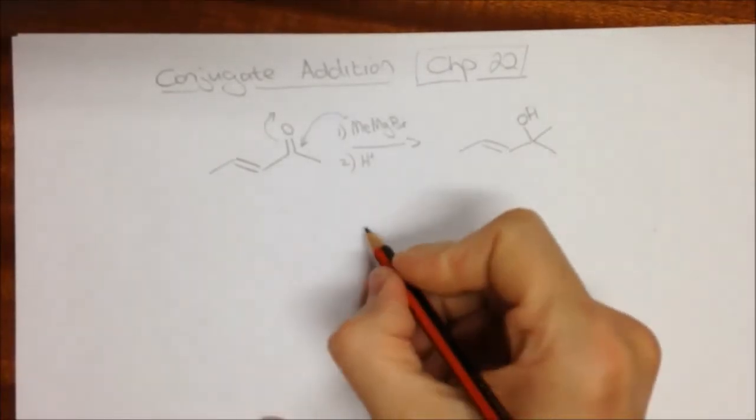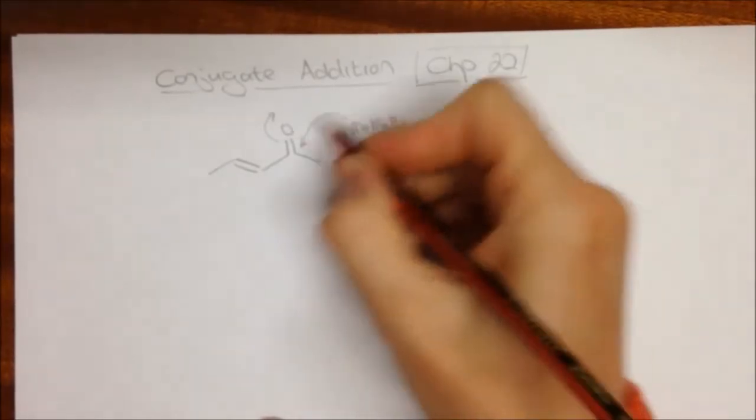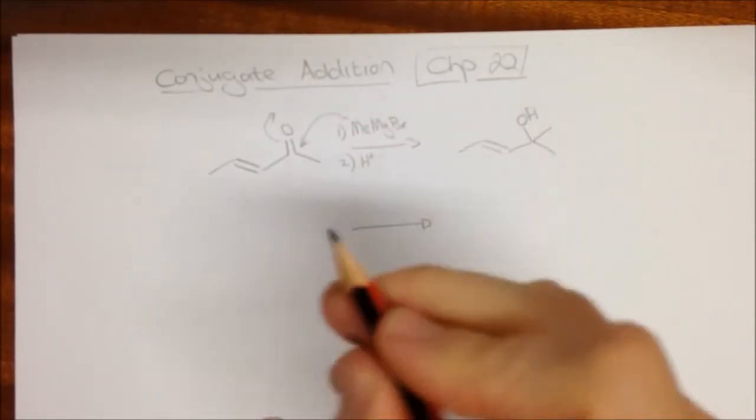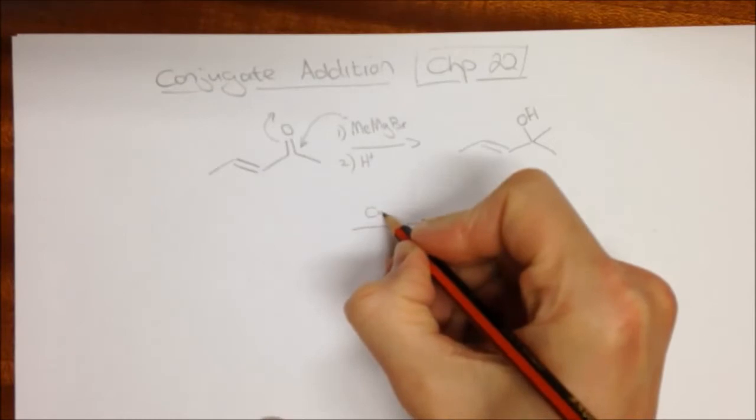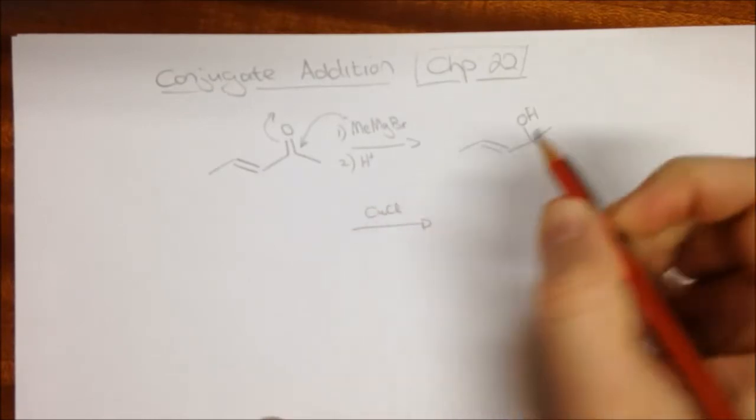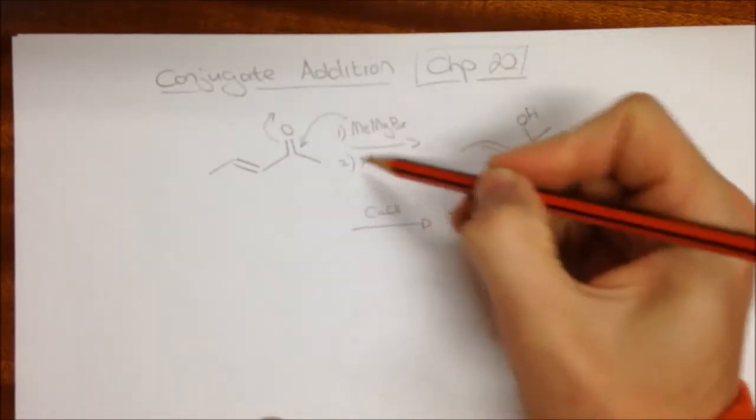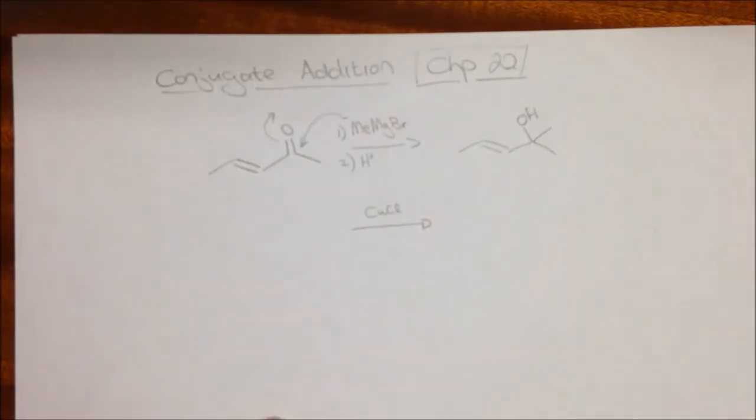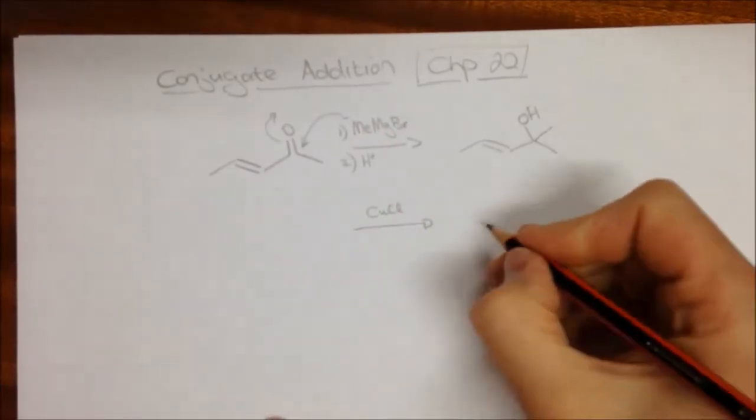If we do this exactly the same reaction as we have above here, but we add just a very small amount, a catalytic amount of copper chloride. So the first step is exactly the same. We've just now added some copper chloride. We get a different product.